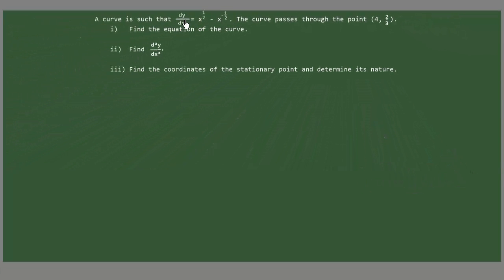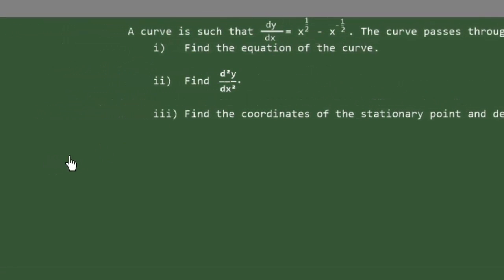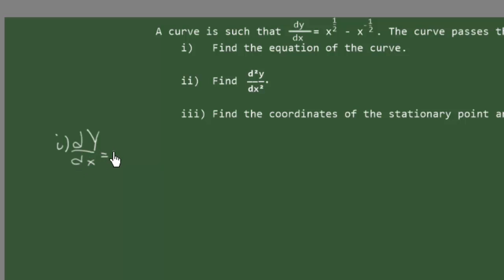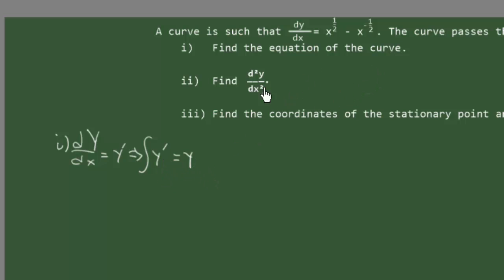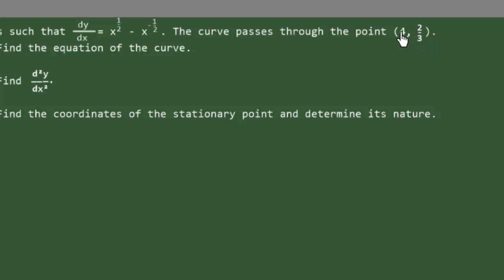To answer the first question, because we know that dy/dx is the derivative of the equation we are looking for — dy/dx is y prime — to find y, we will need to integrate y prime. We will take the integral and then we will have the constant of integration. We will find the value of the constant of integration by applying the given point (x, y). Then we can write the equation of the curve.